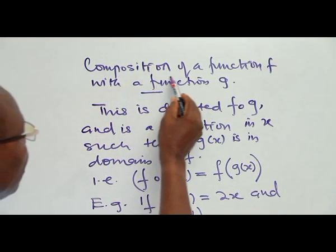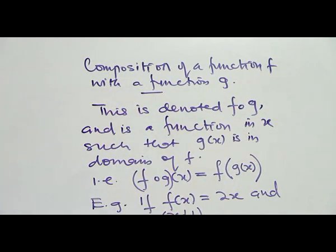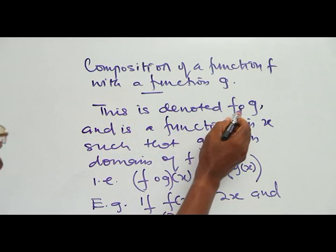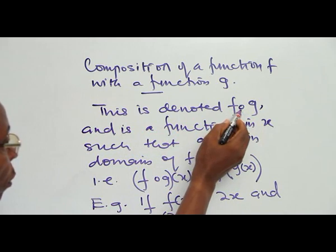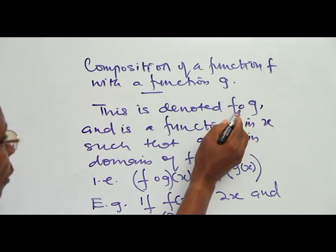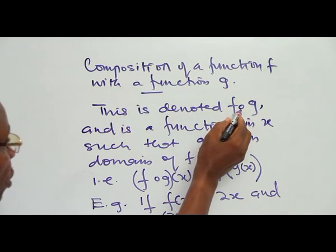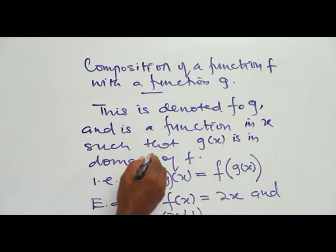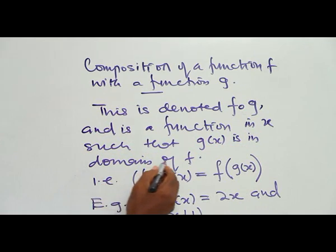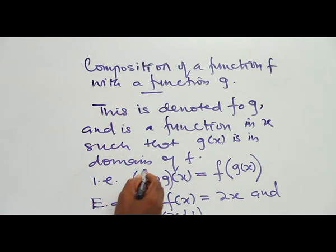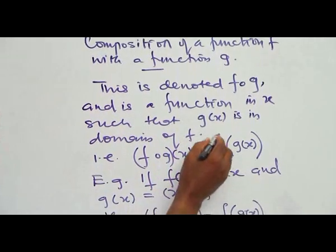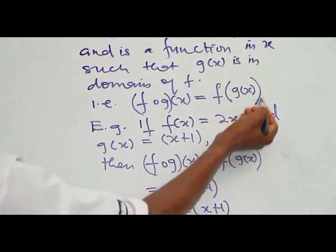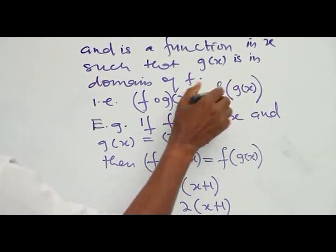Let us now look at the composition of a function F with a function G. This is like looking at a combination of one function and another function. This is denoted F composite G — written with a composition symbol, not a zero or O. It is a function in S such that G(S) is a domain of F. For F∘G(S), it equals F(G(S)).